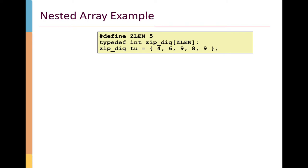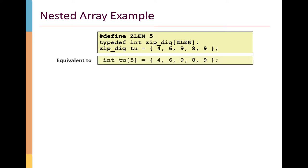Let's look at an example of a nested array — a two-dimensional array. We start with the one-dimensional array called ZipDig, a typedef that gives us a simple way to identify an array of integers. It has length Zlen, defined as the constant five. The typedef expands to an array of five integers called Tu with the same initializer.